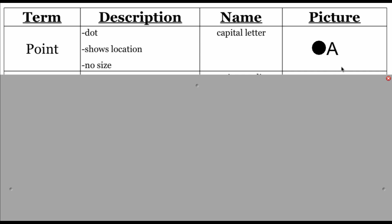But we do draw a dot that's visible just so we can talk about these locations. If we look over on the far right-hand side, we have a picture — a dot with a capital letter written next to it. When we're talking about naming points, we use that capital letter to identify what specific point we're talking about. So if we were to name this object drawn out in the picture, we would name it point A.